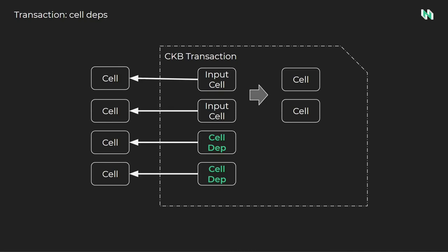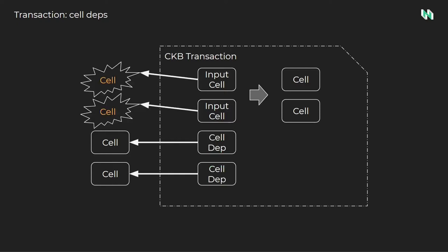Next, we'll look at cell DEPs. A cell DEP, or DEP for short, stands for dependency — a resource needed by a transaction. Just like an input, a DEP refers to a live cell that has not been previously consumed. Both input cells and cell DEPs refer to live cells, but how they are treated after a transaction executes is very different. Once the transaction is committed to chain, the input cells are consumed and converted from live cells to dead cells. Cell DEPs are not consumed and remain live cells that can be reused. The process of cell consumption is similar to Bitcoin's UTXO model — the terms unspent and spent are sometimes used instead of live cell and dead cell.